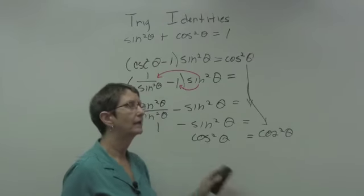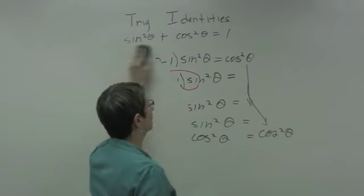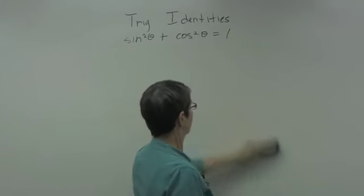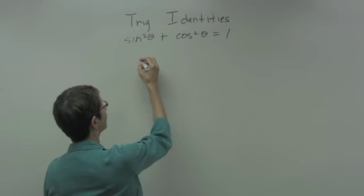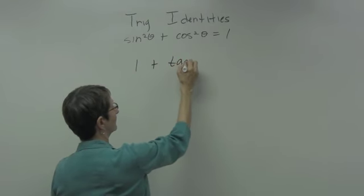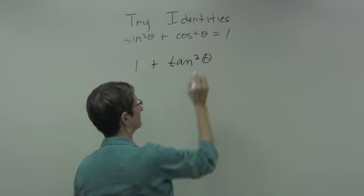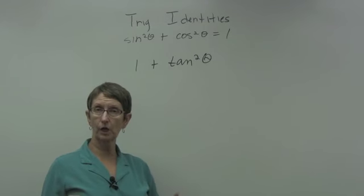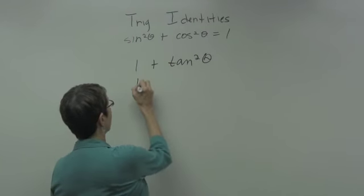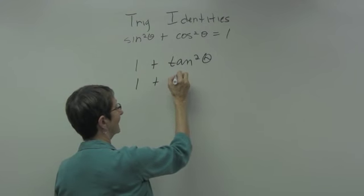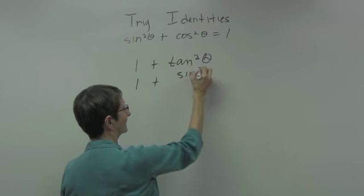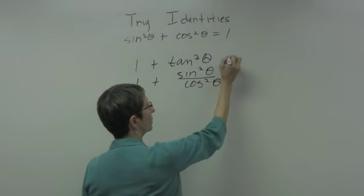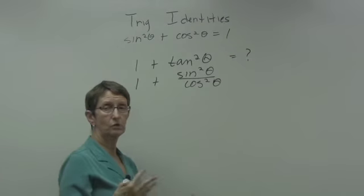Let's look at a second one, just to see how we can simplify it or rewrite it in a different form. I want to look at 1 plus tangent squared theta. Tangent is sine over cosine, so tangent squared would be sine squared theta over cosine squared theta. I don't know what I'm going to end up with — I'm just going to try to find something.